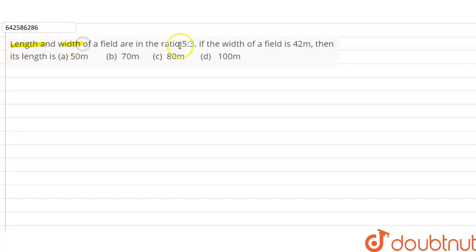If the width of the field is 42 meters, then its length is what? So it's given that the ratio of length to width is 5:3, so we can write it as length divided by width equals 5 divided by 3.